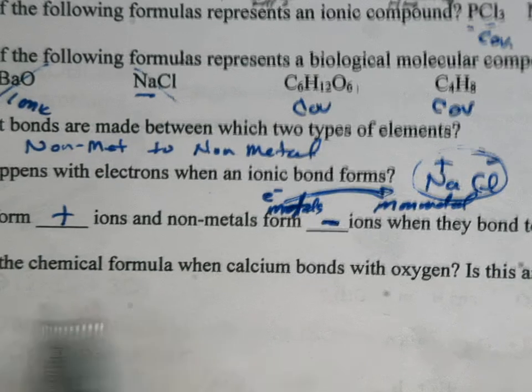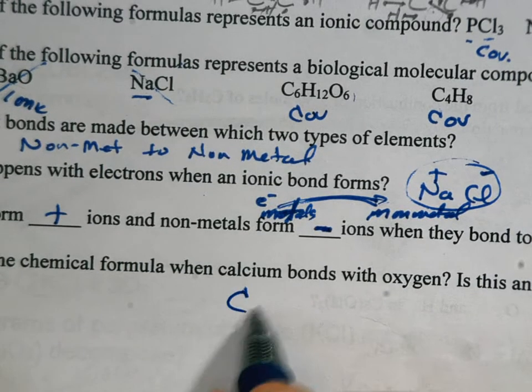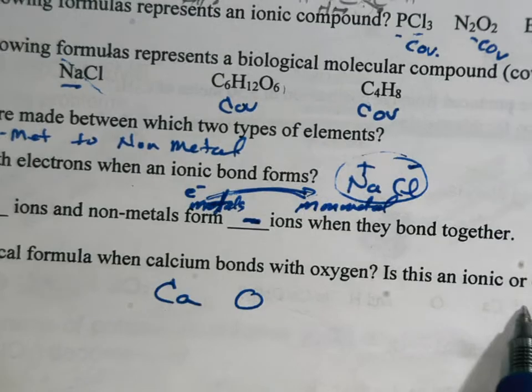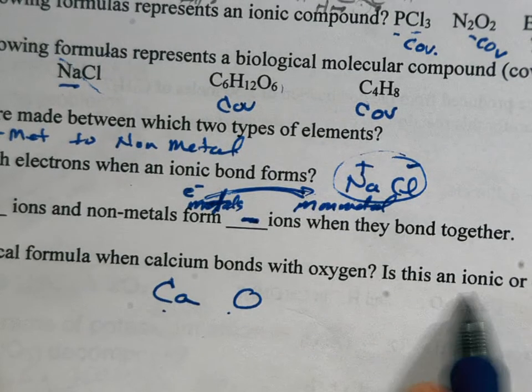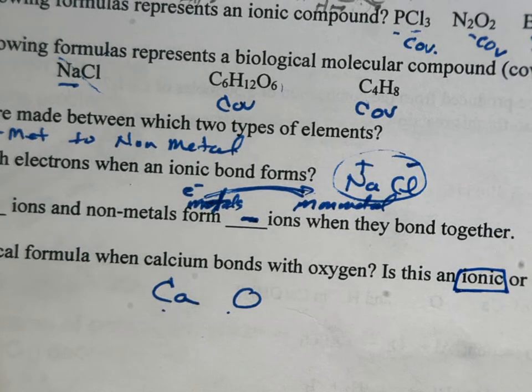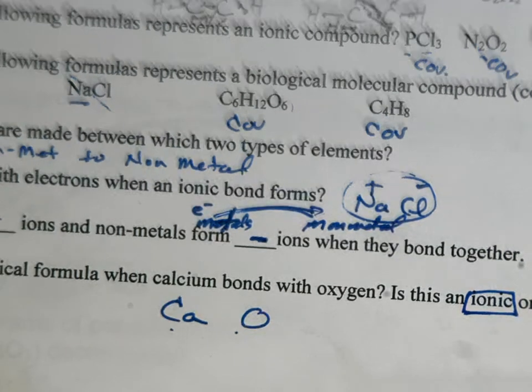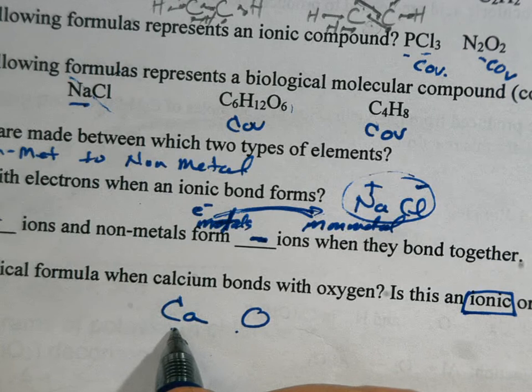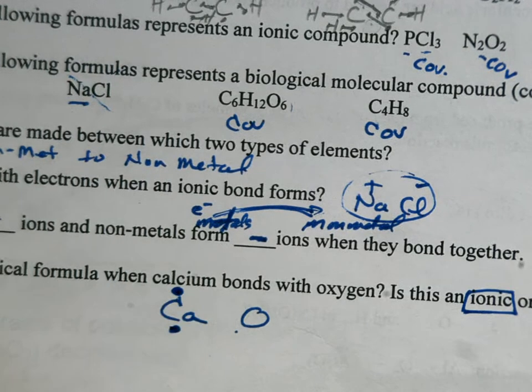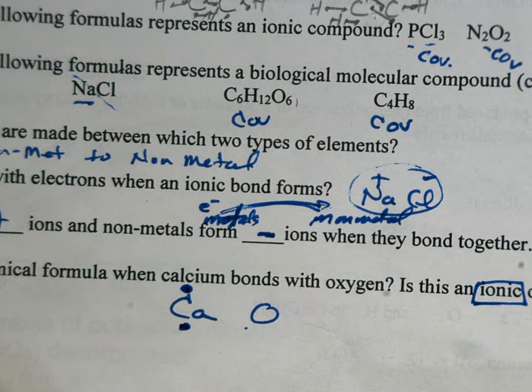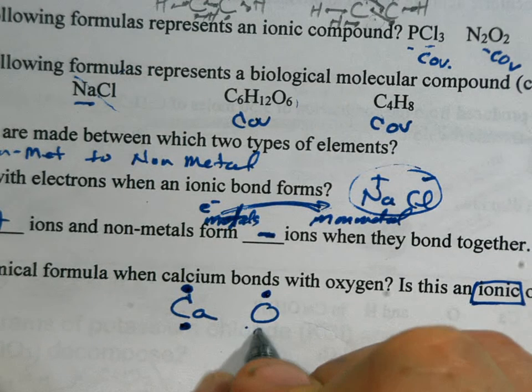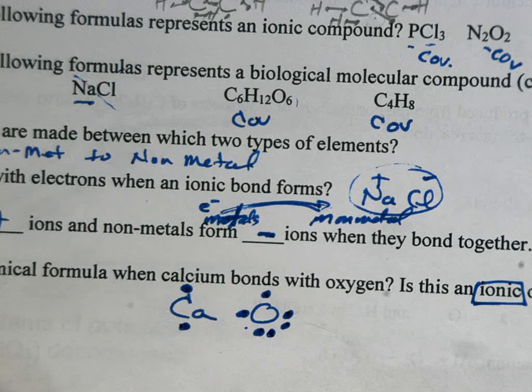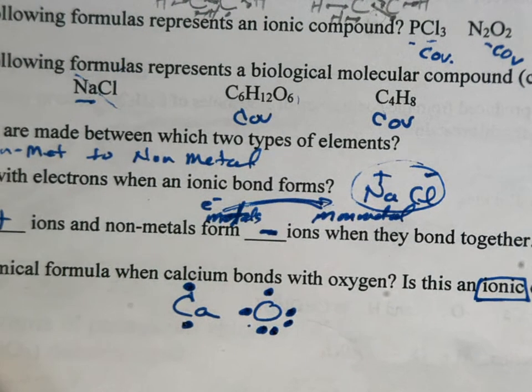What's the chemical formula when calcium bonds with oxygen? Is this an ionic or a covalent compound? Well, calcium's a metal, and oxygen's a non-metal, so that'll be ionic. And when these bond together, calcium, I'm going to draw its Lewis structures. It's in group 2 of the periodic table. It has 2 valence electrons. Oxygen is in group 16 of the periodic table. It has 6 valence electrons. And so what happens is, perfect match.